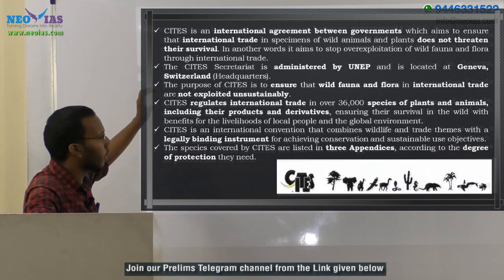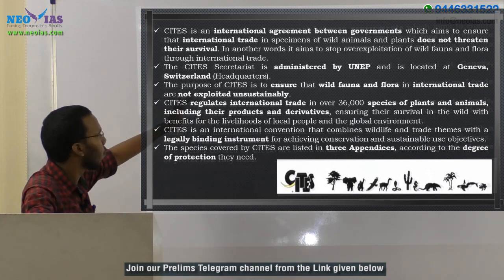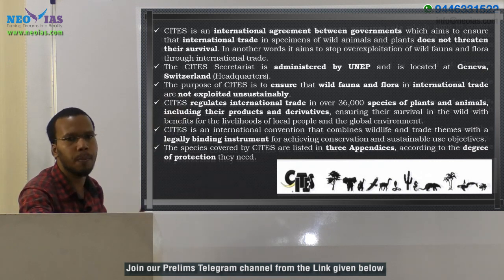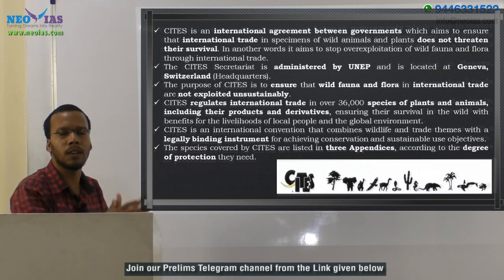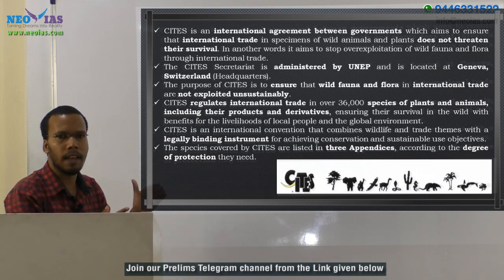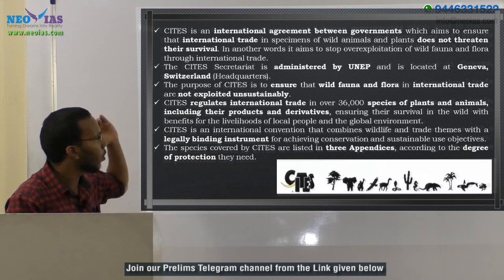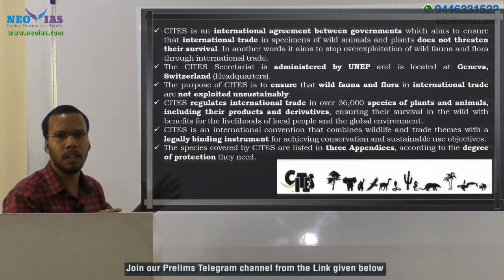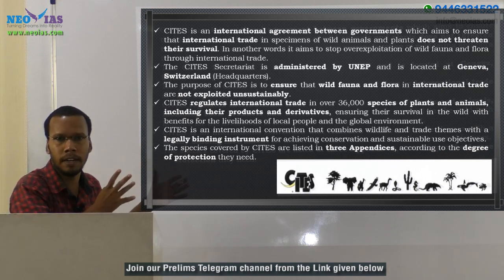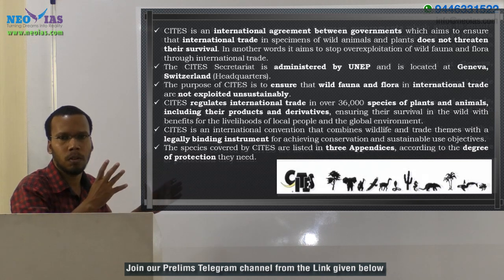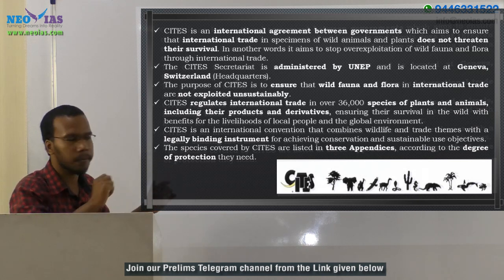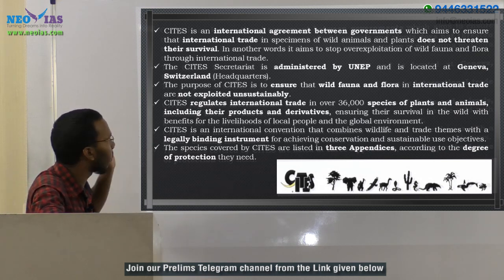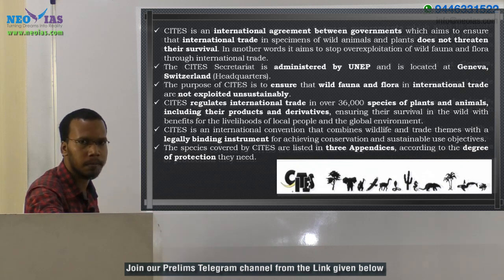The CITES secretariat is headquartered in Geneva, Switzerland, and it is administered by the United Nations Environment Programme (UNEP). Regarding UNEP, you should study it well — UNEP is an outcome of the 1972 Stockholm Conference. The purpose of CITES is to ensure that wild fauna and flora in international trade are not exploited unsustainably.